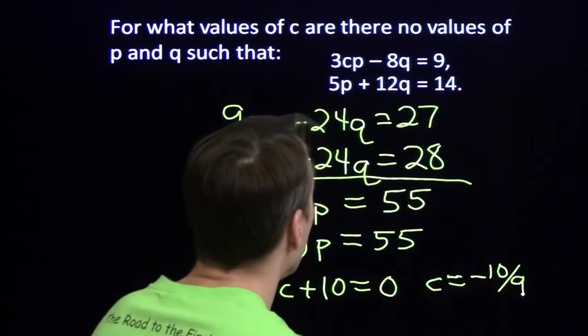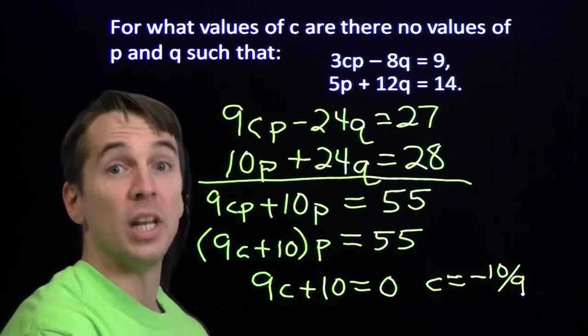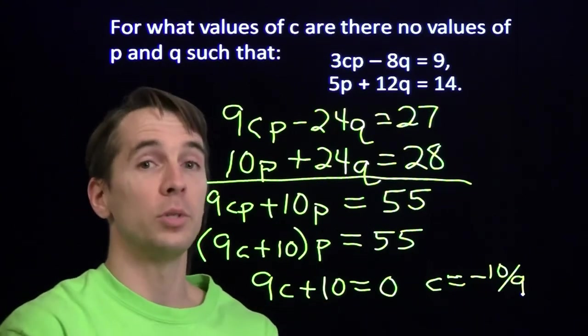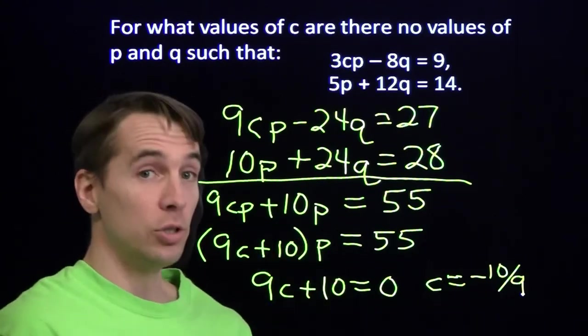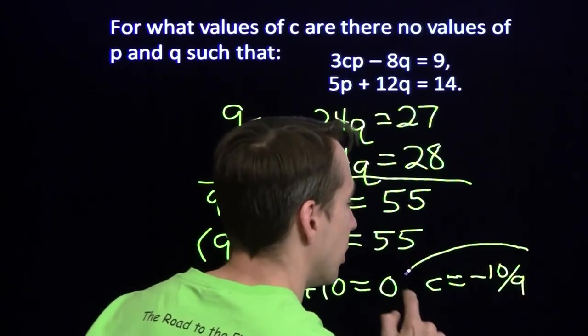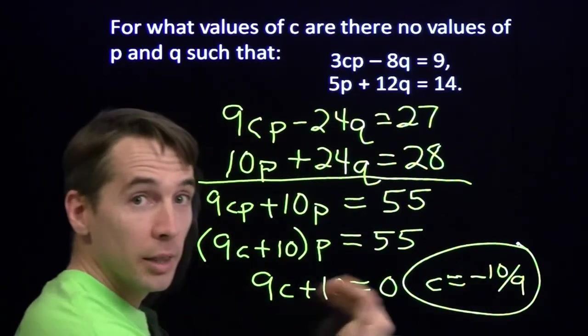Now, if you want to check that, take that negative 10 ninths, stick it back into this equation, and then try solving the resulting system of equations. You should find that there are no solutions. And then you'll know for sure that we are done.